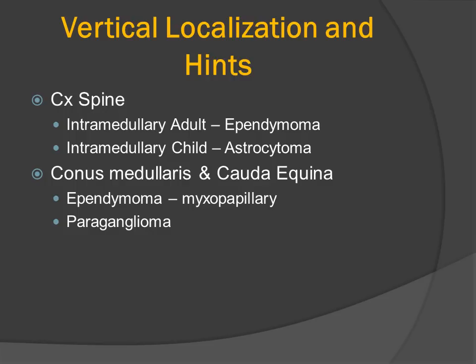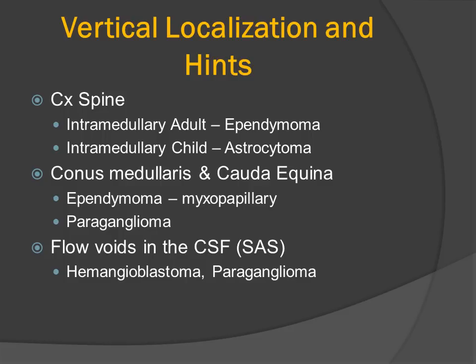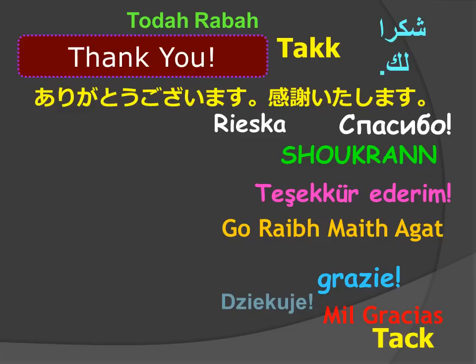Lesions that occur in the conus medullaris and cauda equina are commonly going to be the myxopapillary type of ependymoma, but other lesions may occur here, including paragangliomas. And if we see flow voids within the CSF, we might consider hypervascular tumors like hemangioblastoma and paraganglioma.